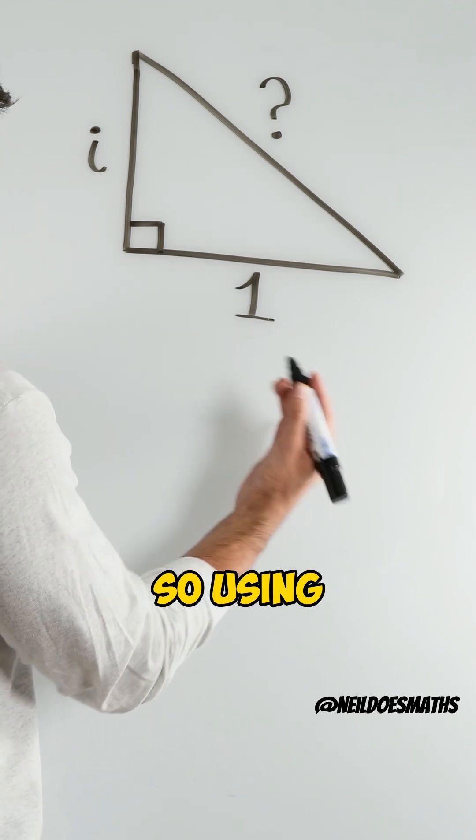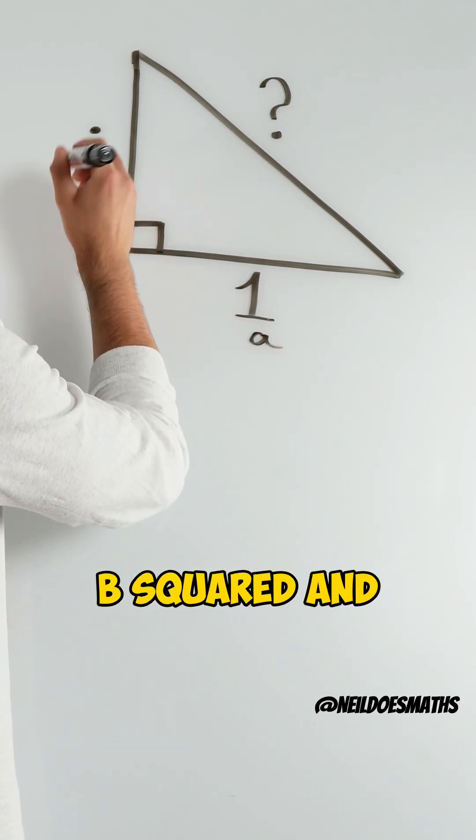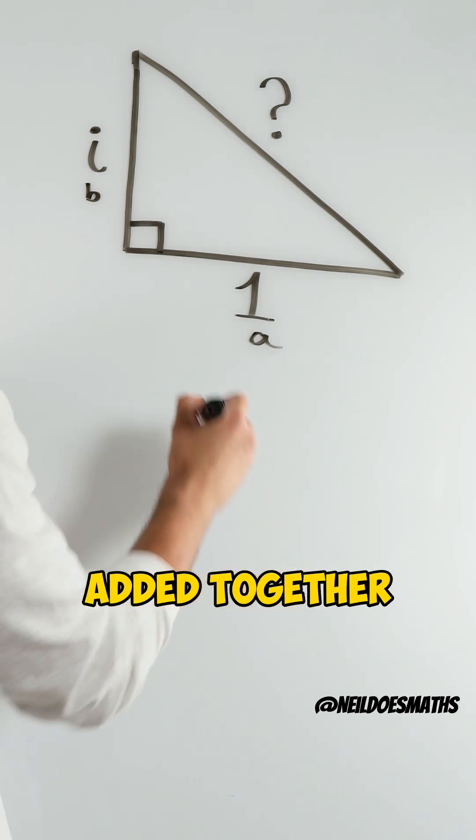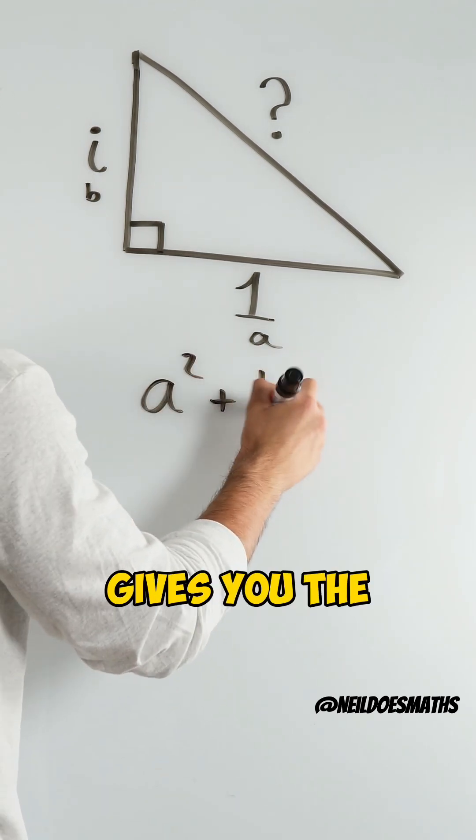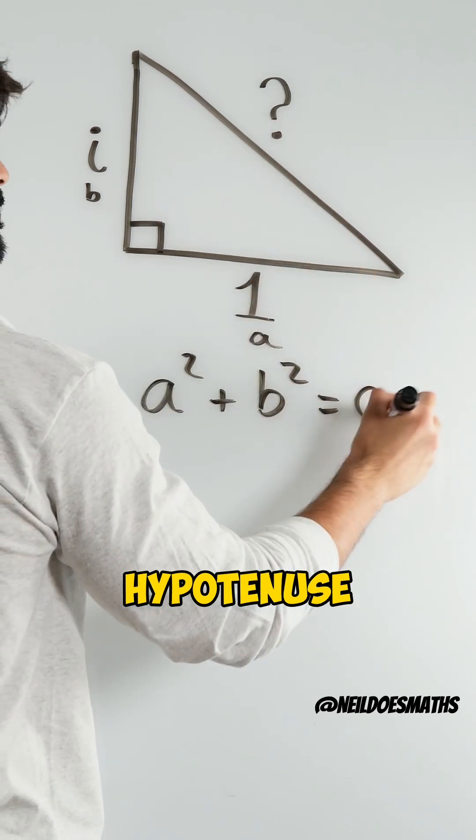So using Pythagoras' Theorem, the shorter lengths a and b squared and added together always gives you the hypotenuse squared.